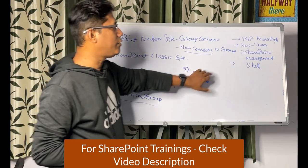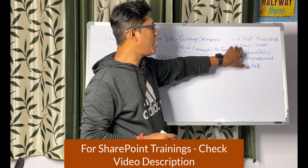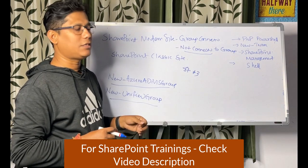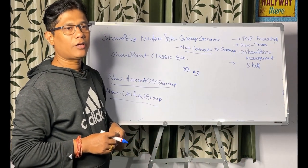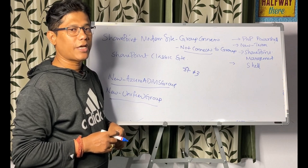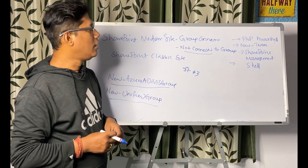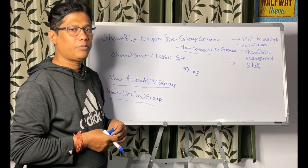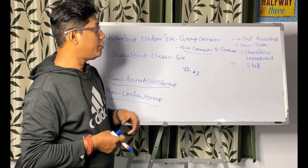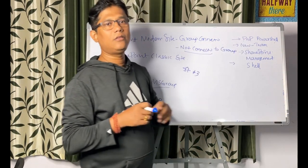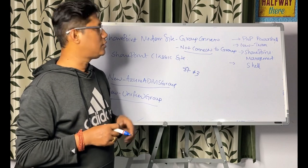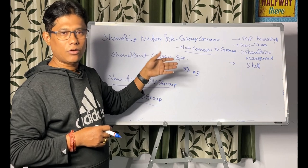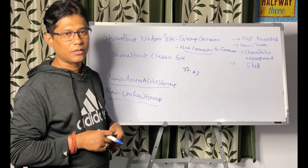The STS#3 template creates a modern team site that is not group-connected. If you create a Microsoft Team, behind the scenes it will create a modern SharePoint site, but the problem I found is with the URL — I couldn't find a way to pass a custom URL. However, if you use PNP PowerShell, there are very easy ways to do it by just changing parameters for modern team site, classic site without a group, and communication site.